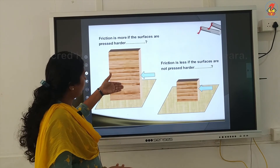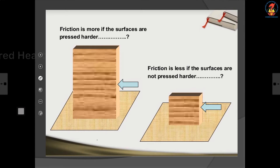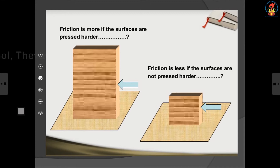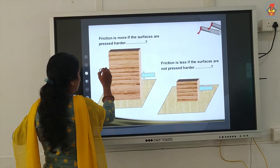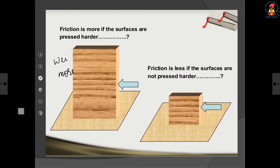From this diagram it is clear how hard the object is pressed. Friction is more if the surfaces are pressed harder. The weight of this object is more, so frictional force is more. Here, the weight of this object is less, so frictional force is less.